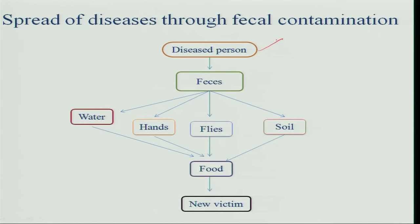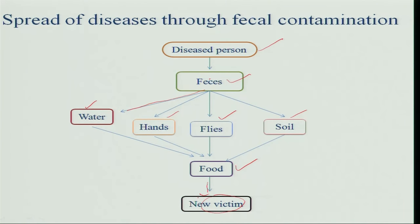The spread of disease through fecal contamination occurs when a diseased person excretes feces in a field, which can be washed by water into a stream, or through unwashed hands — the person comes and touches the food, contaminating it. Flies can reach the feces and then contaminate food. In soil where a person excretes, bacteria grow into the soil, and when crops are grown there, the bacteria enter the food chain. These are the various ways food becomes contaminated, allowing organisms to enter a new victim — that is how communicable diseases are spread.